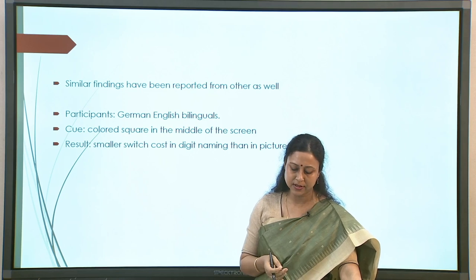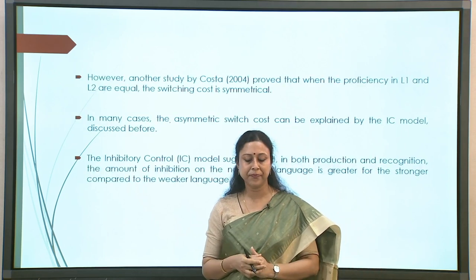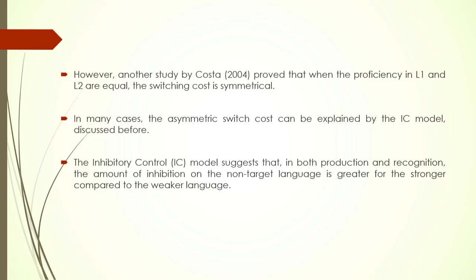Similar findings have been reported from many other studies, including German-English bilinguals. However, not all studies found switch cost asymmetry. Costa (2004) showed that when proficiency in L1 and L2 are equal — that is, neither language is dominant — the switch cost is symmetrical. This ties back to the general principle: asymmetric switch cost arises only when one task or language is more difficult or dominant than the other.